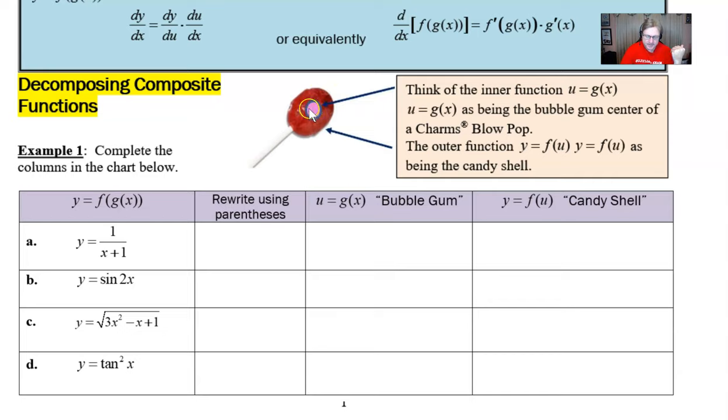And then the outer function, which we're going to call y, is this candy shell, right, this cherry candy shell. So if we can put together our composite function in such a way that we can recognize the bubblegum from the candy shell, we're going to set the stage to be able to take the derivative using the Chain Rule.